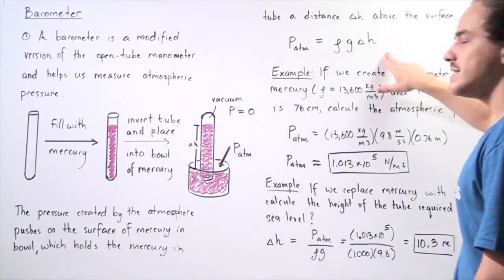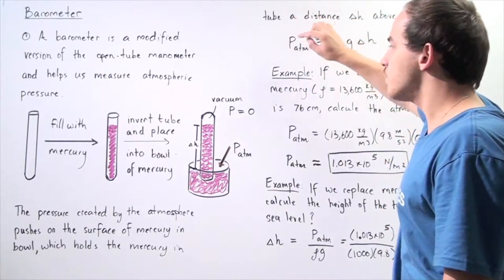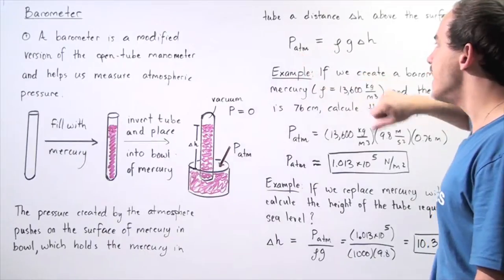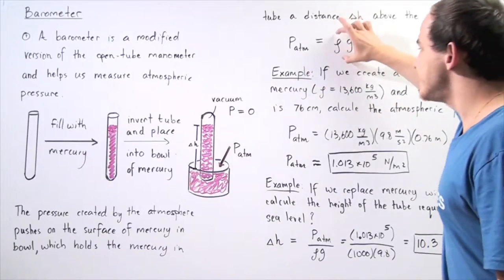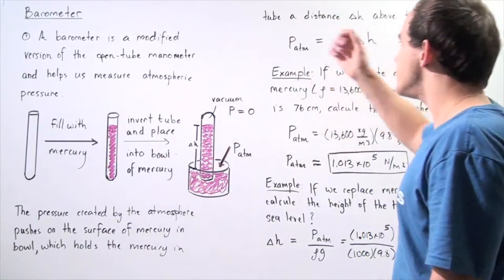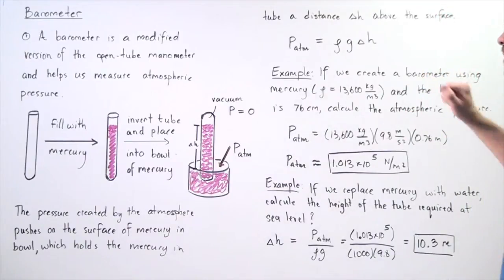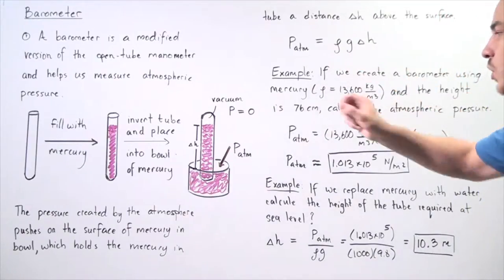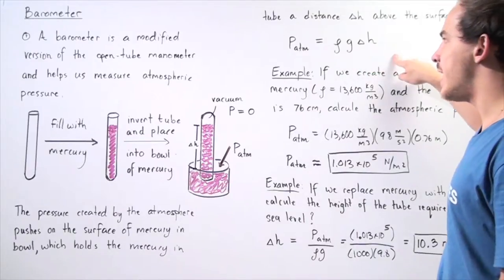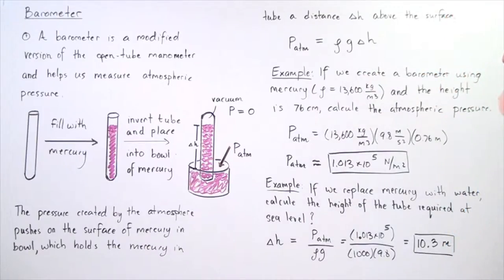The formula is given by this equation. The pressure of the atmosphere, P_atm, is equal to the density of the liquid used, in this case mercury, multiplied by the gravitational constant g, multiplied by the change in height, which is given in meters.